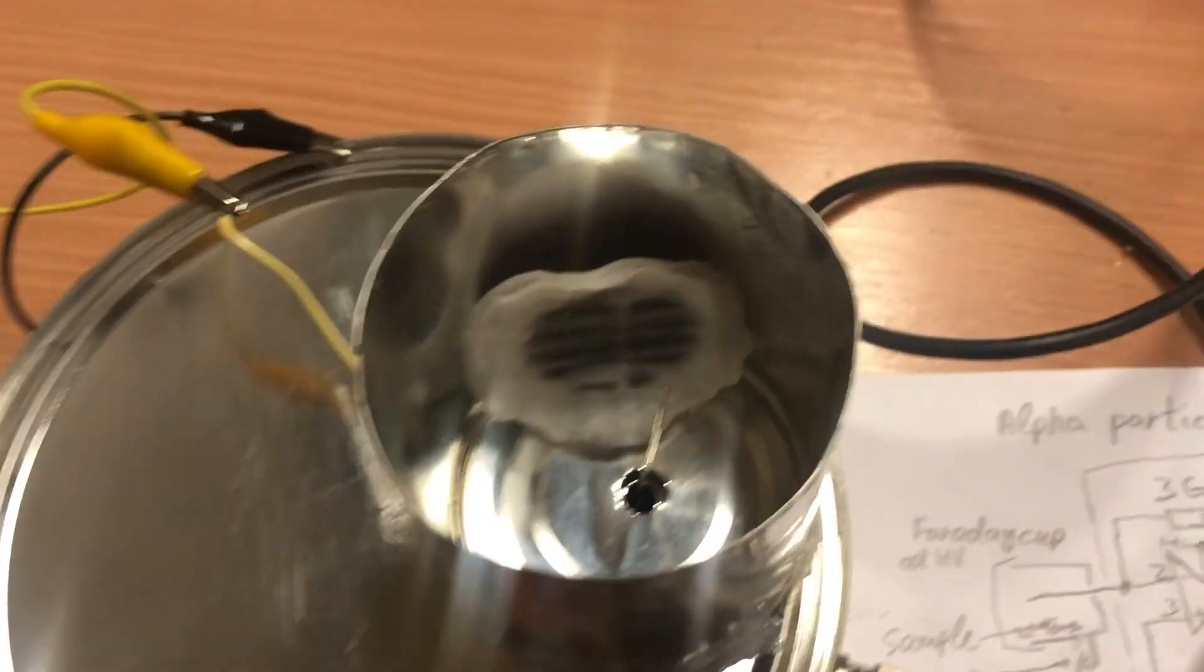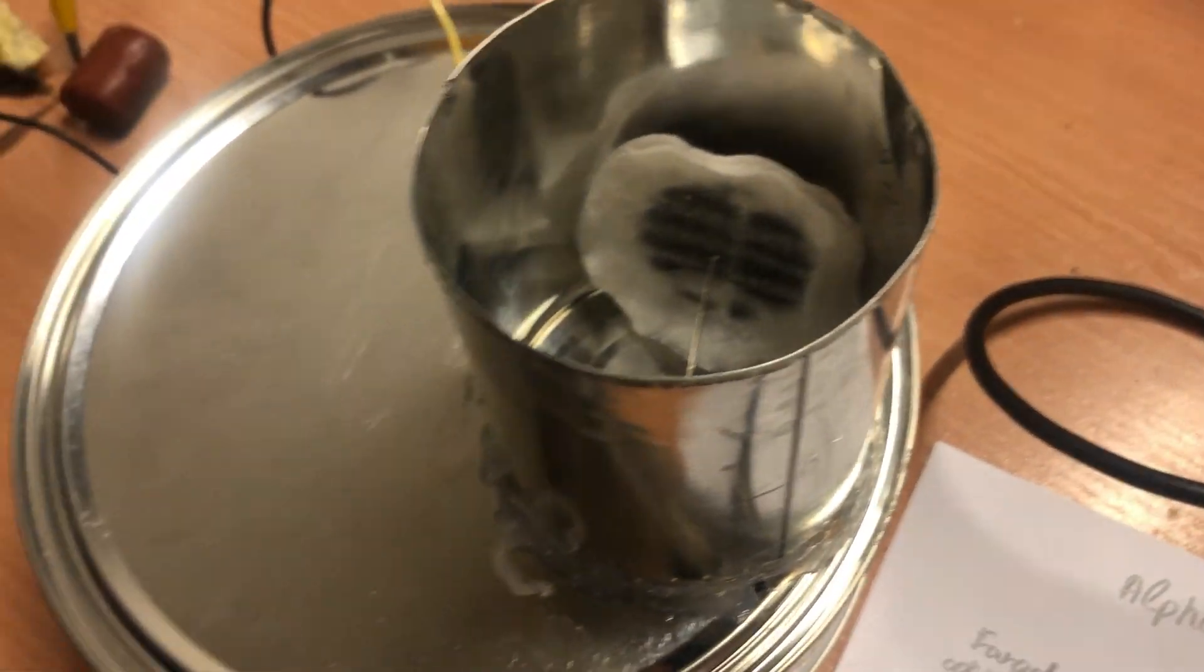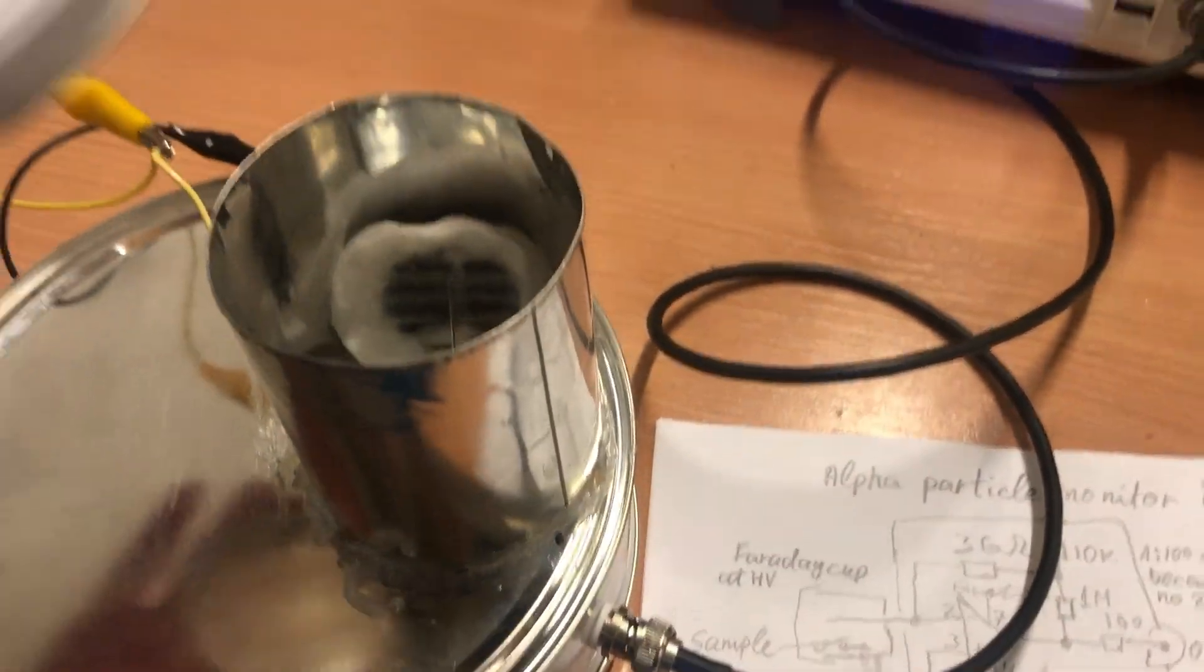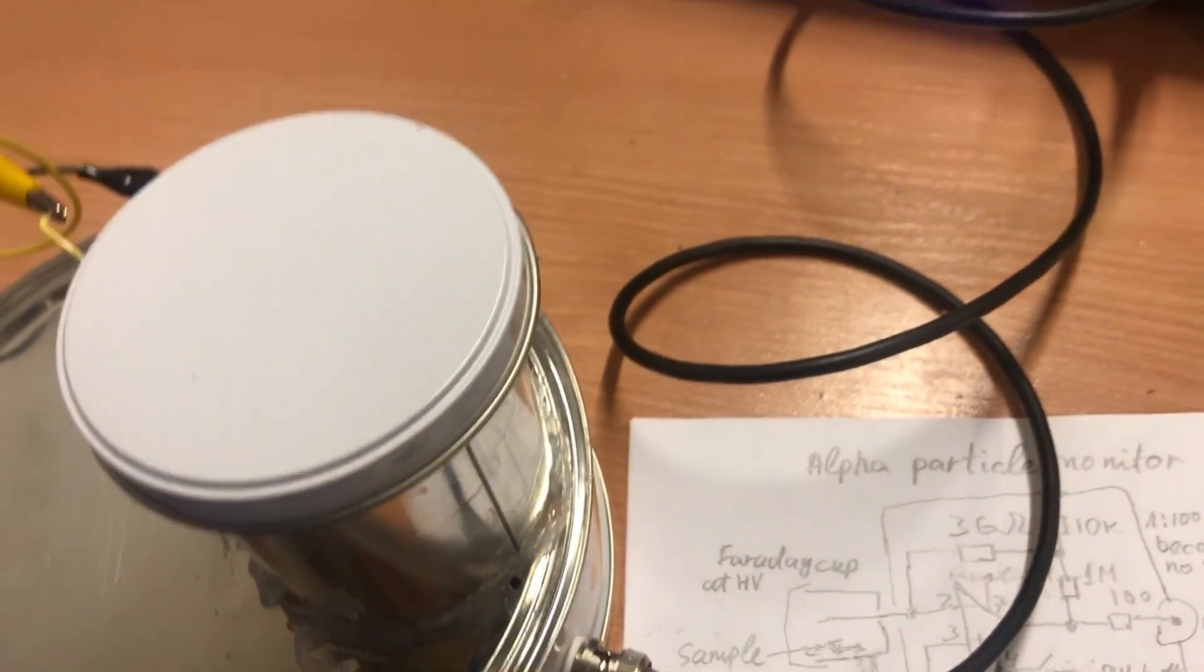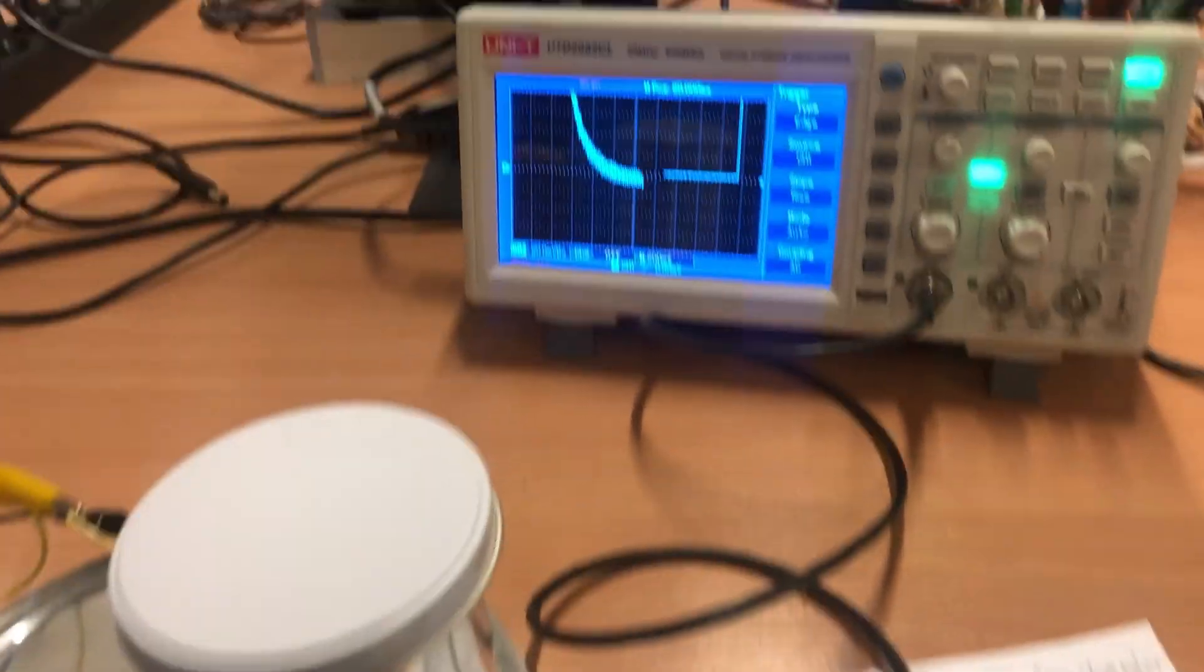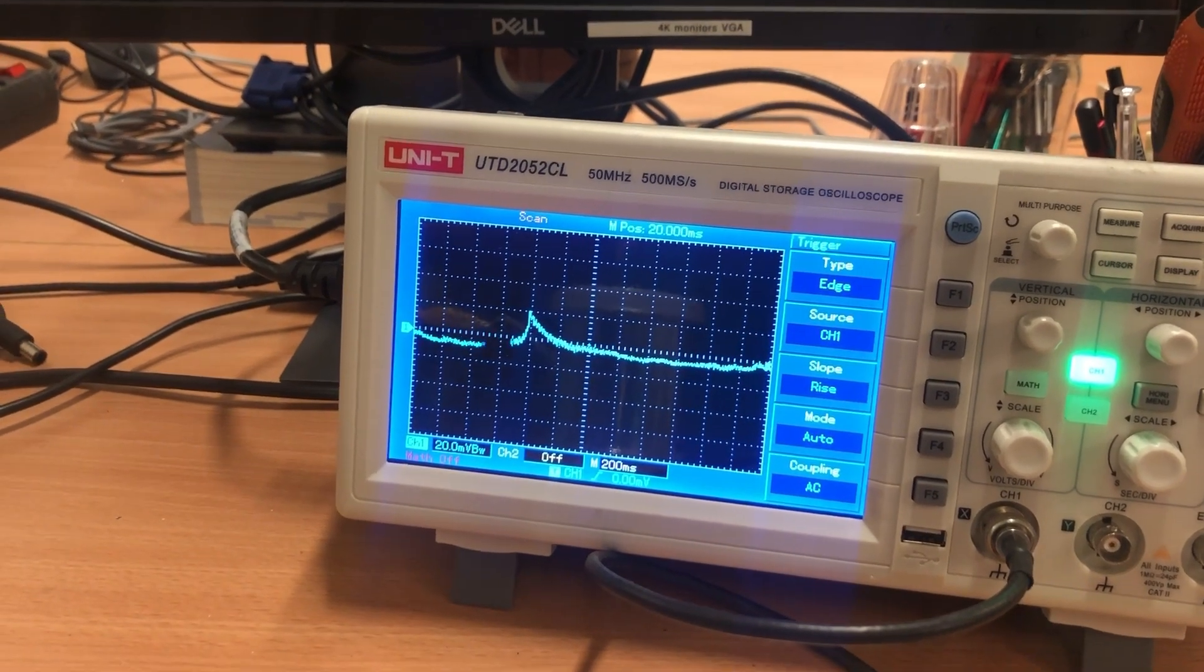In the Faraday cap we see cotton sample with black soot from filtered air, and it contains some radon decay products. So we close the cap, switch on amplifier, and on scope see pulses.